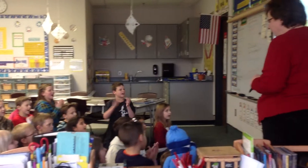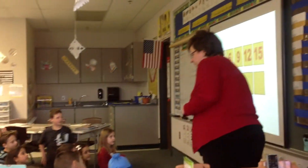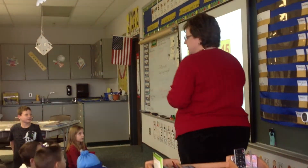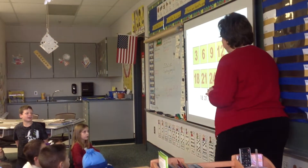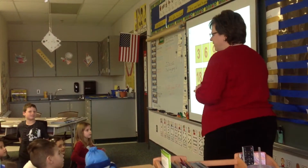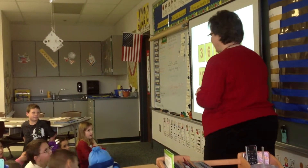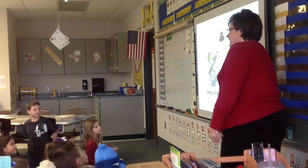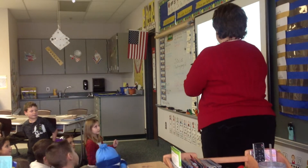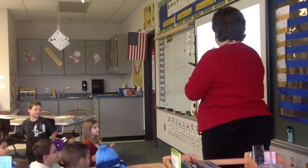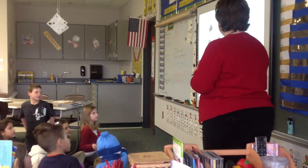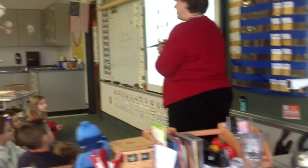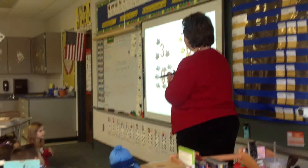Three, six, nine, twelve, fifteen, eighteen, twenty-one, twenty-four, twenty-seven, and thirty. Think of all the things we see, things we use, things we eat. Now let's have these things in multiples of three.